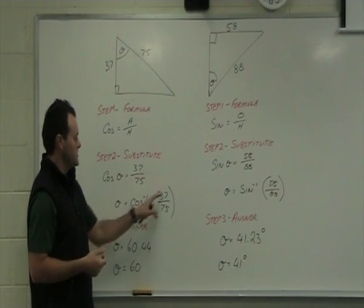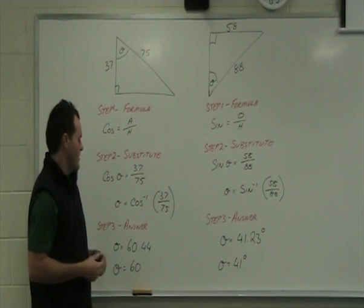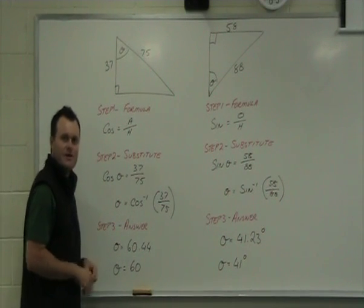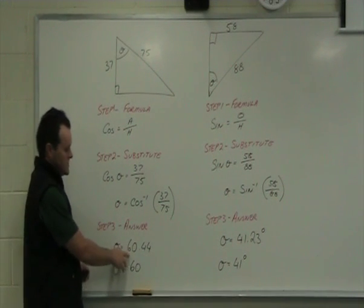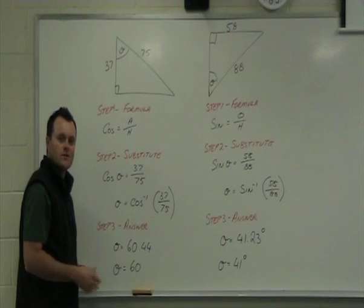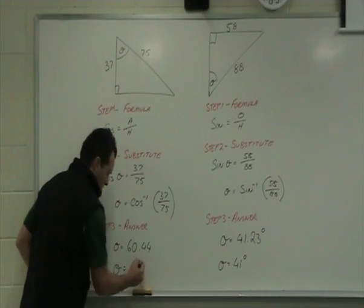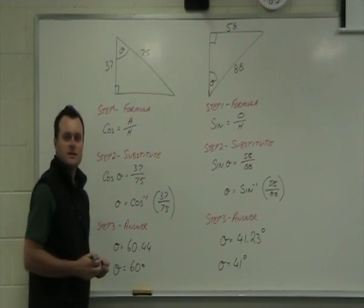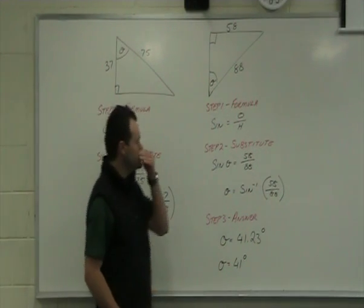We've got to change that around to get theta by ourselves. So, we're going to do second function cos 37 over 75, which will bring us to step three, our answer, which is 60.44 degrees, which we've rounded down to be 60 degrees. So, give yourself a tick if you've got that one right.